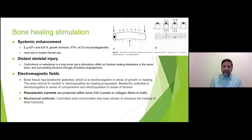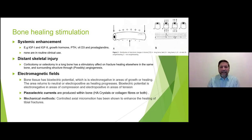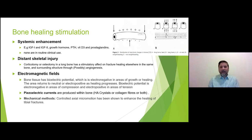People have tried using IGF, PTH, vitamin D, and prostaglandins, but none have proven to work well enough to justify routine use. We don't do systemic enhancement routinely. I've heard people say give vitamin C or vitamin D just in case the patient is deficient — I wouldn't mention it in the exam as a recommendation, but I'm aware that systemic enhancement is a category.